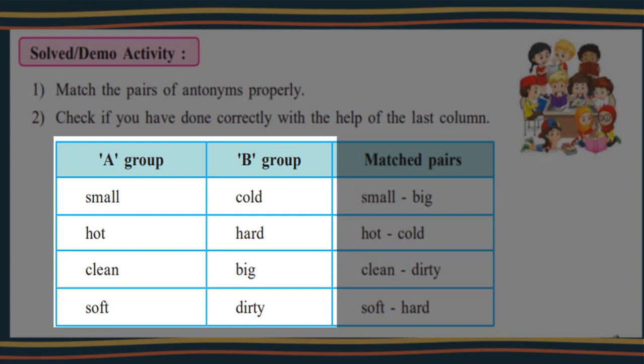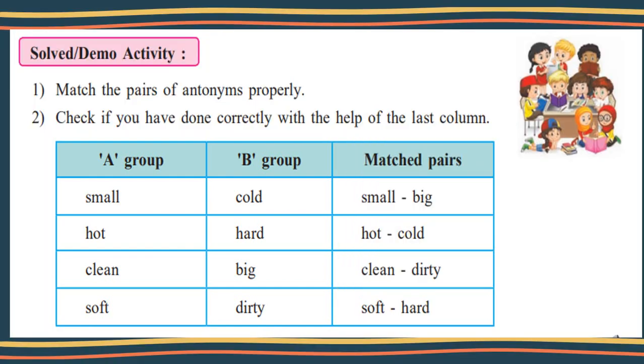So here is given A group: small, hot, clean, soft. And here is given B group: cold, hard, big, dirty. Now match the pairs. Small, big, yes. Hot, opposite word of hot is cold. Clean, opposite word of clean is dirty. Soft, hard. Now see whether we have matched pairs right or wrong. See here matched pair: small, big, yes. Hot, cold, correct. Clean, dirty, yes. And soft and hard. So note down this also in your notebook.